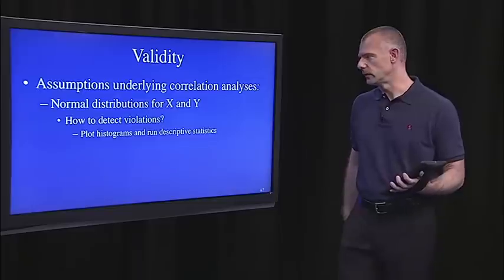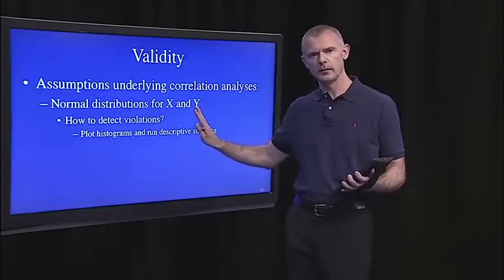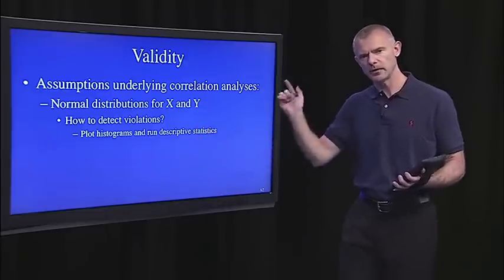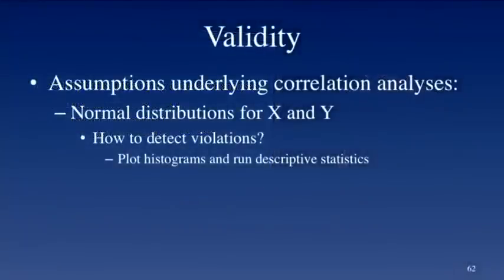So, let's walk through each one of these. The first one is pretty easy to deal with, and you could deal with that based on what you learned in lecture two. We assume that X and Y are normally distributed, at least for the type of correlation coefficient that we've been discussing today.